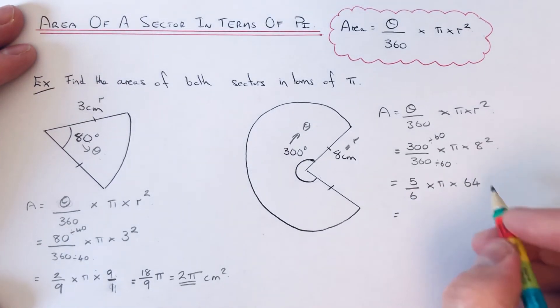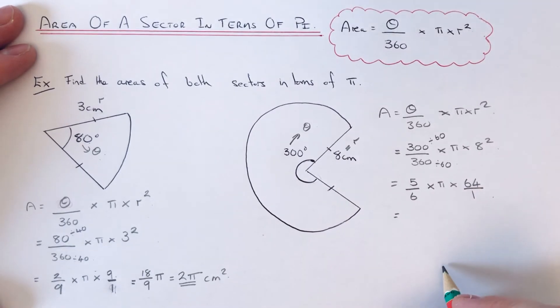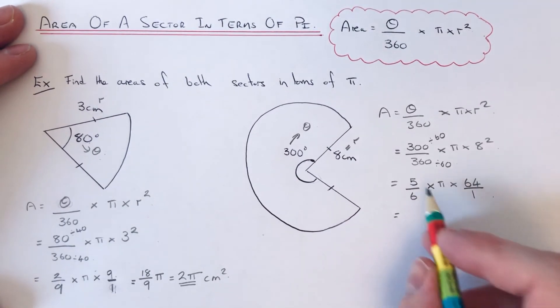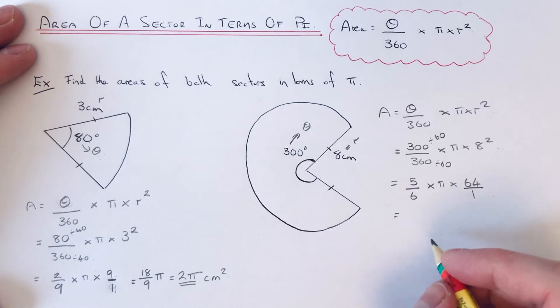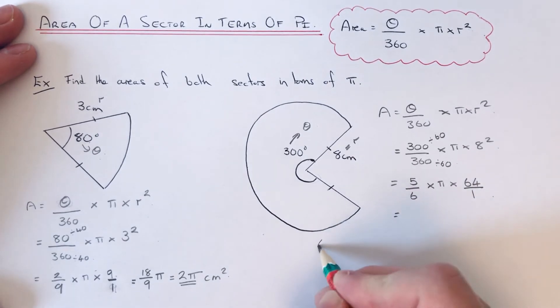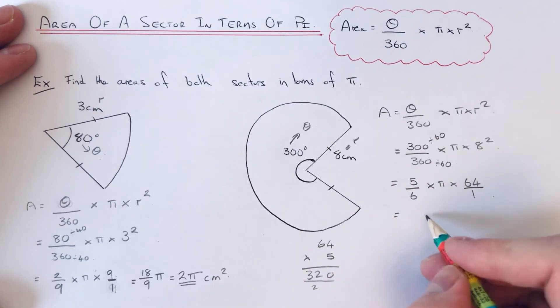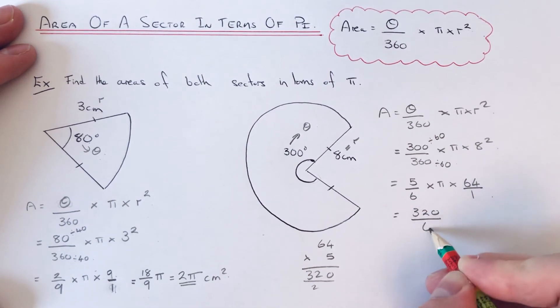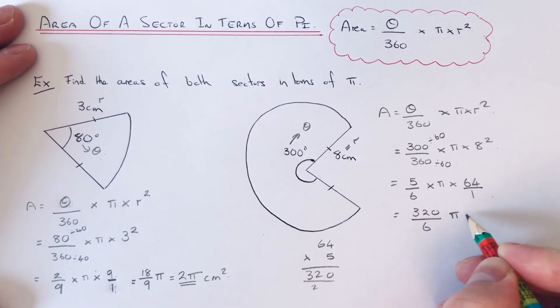So we can now multiply 5 sixths by 64. We'll just write 64 as 64 over 1. So 5 times 64. Let me just work that out on the side of the page. So that's 20, 6, 5 is 30 plus 2 is 32. So that will give us 320 over 6 pi.